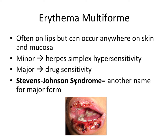Stevens-Johnson syndrome is another name for the major form of erythema multiforme. One way to remember: erythema refers to redness, and multiforme means there are multiple forms — the herpes simplex one and the drug one.